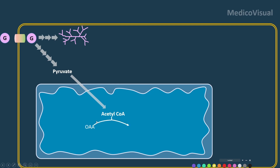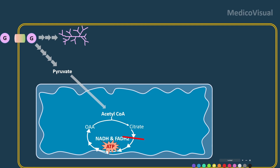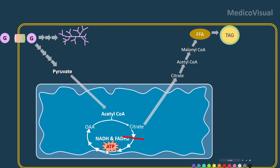by combining with oxaloacetate and forming citrate, and so on. And if more and more glucose is coming, this glucose will ultimately be converted into free fatty acids, which will then be converted into triglycerides.